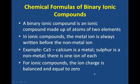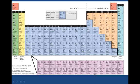For ionic compounds, the ion charge is balanced and equal to zero. How do we determine the ion charge? For that, we can look at the periodic table. The periodic table is full of useful information. We can see the ion charge for any atom is written to the right of the chemical formula.